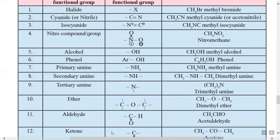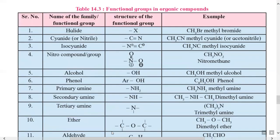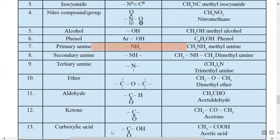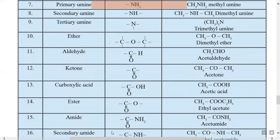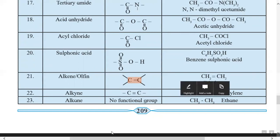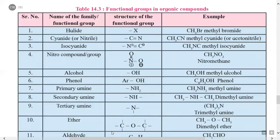Simple examples of functional groups: dash OH is a functional group present in alcohol; dash NH2 is a functional group present in primary amine; carbon-carbon double bond is a functional group present in alkene. Like this, there are different functional groups, and on the basis of functional group, these organic compounds can be classified.